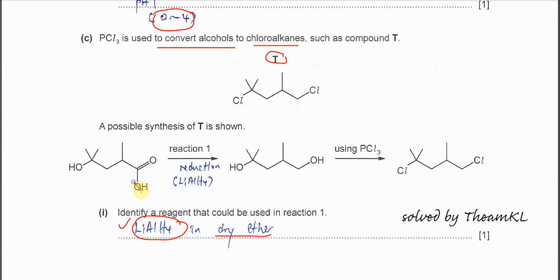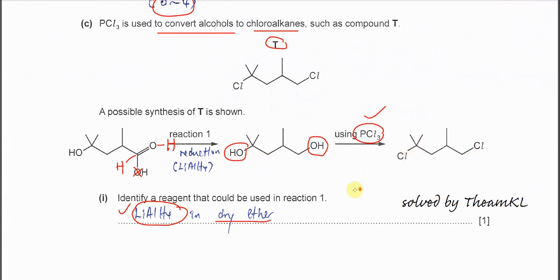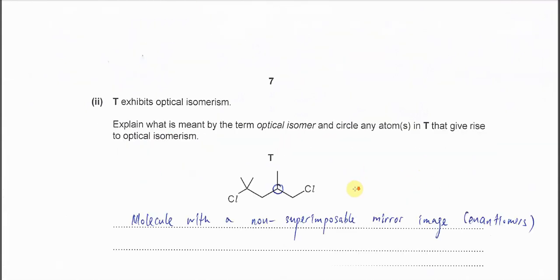It's very easy for this reduction. First, you need to remove oxygen. Then it has to add two hydrogens here. The pi bond is broken. Then it will form this alcohol. After that, use PCl3. PCl3 is a compound that can substitute OH with Cl. The OH will be replaced or substituted by Cl when we use PCl3. So compound T will form.